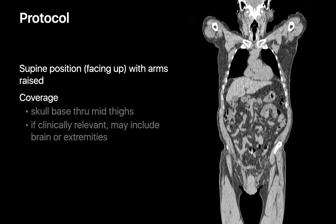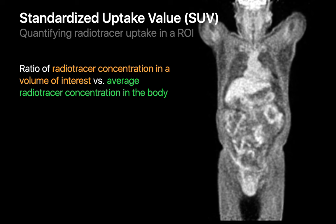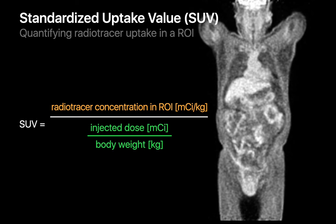Patients getting a PET scan are usually imaged in a supine position with their arms raised above their heads if possible. The scan coverage is usually from the patient's skull base to their mid-thighs. On CT images, the brightness of each pixel corresponds to x-ray attenuation, numerically expressed in Hounsfield units. On a PET image, the brightness of each pixel corresponds to radiotracer concentration, which is numerically expressed as the ratio of radiotracer concentration in each pixel relative to the average radiotracer concentration in the body, normalized by the injected dose and the patient's body weight. We call this ratio the standardized uptake value, or SUV for short.